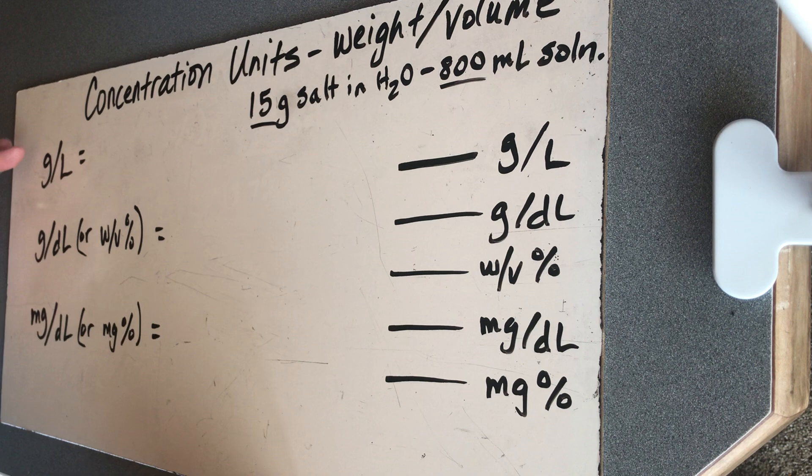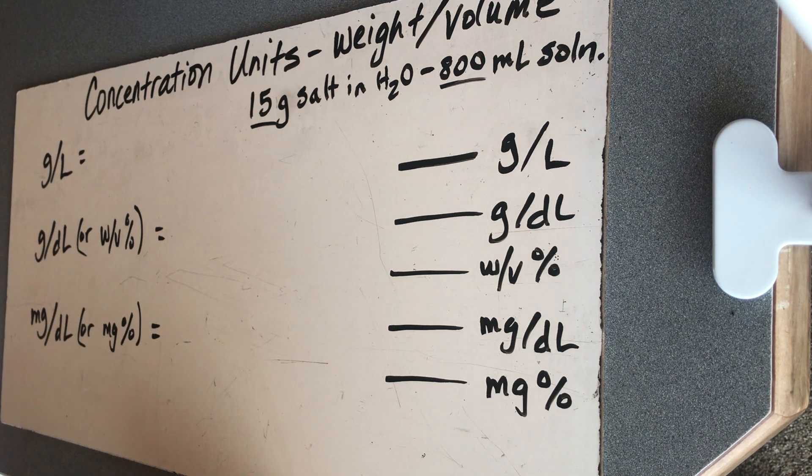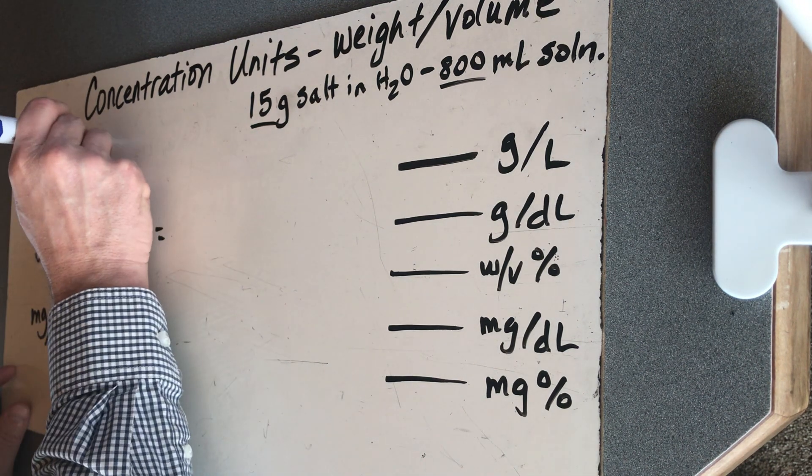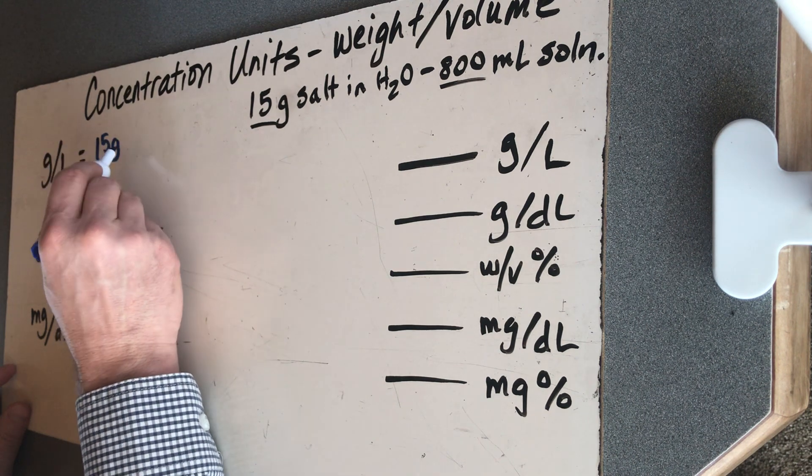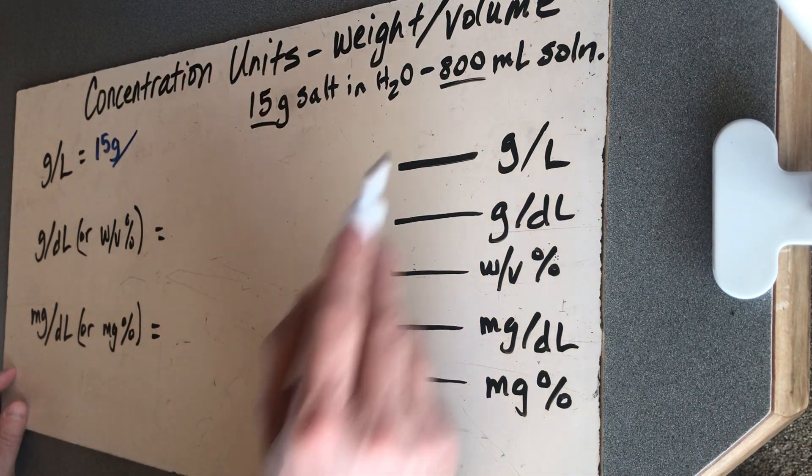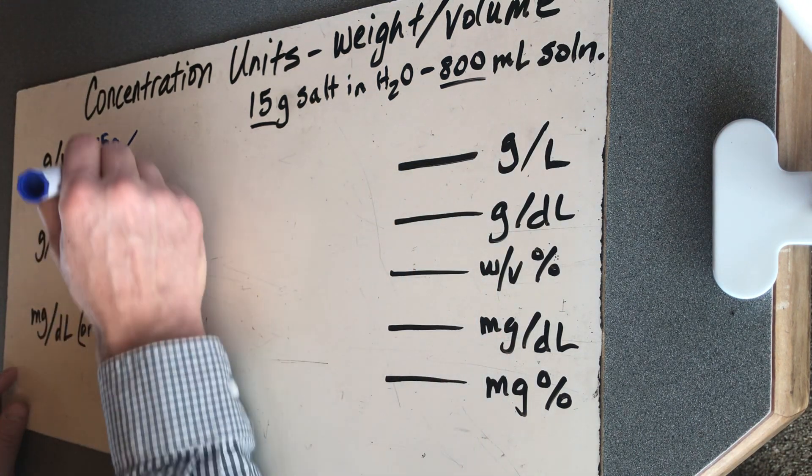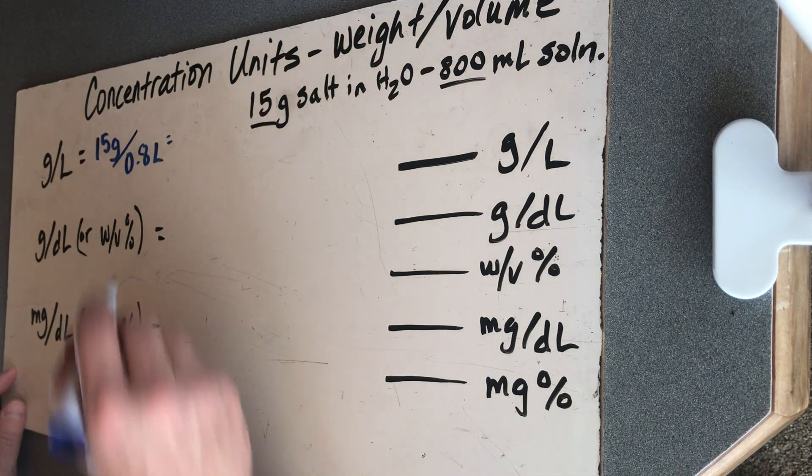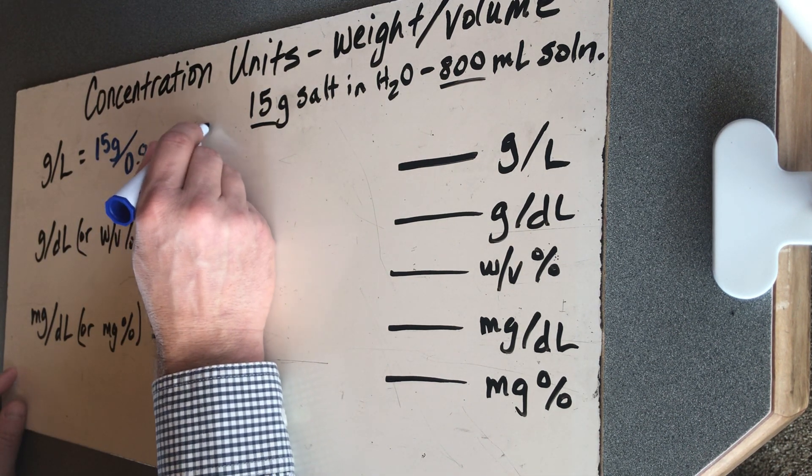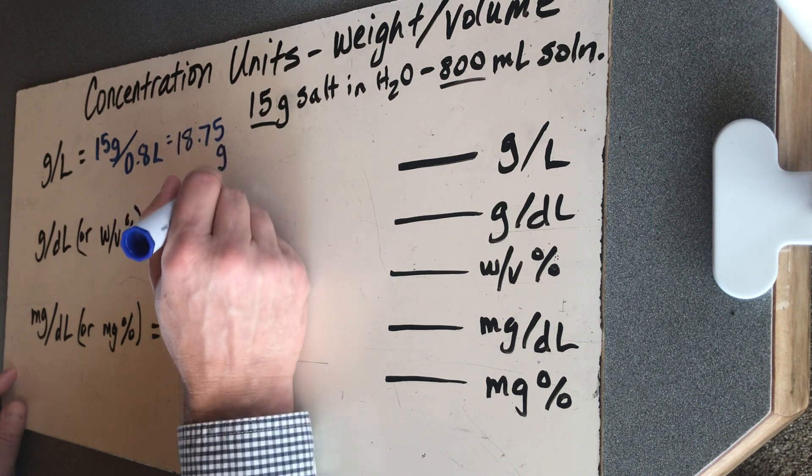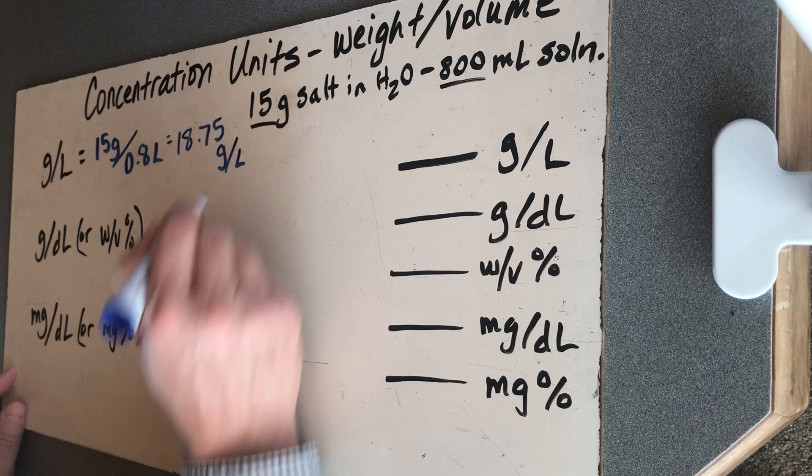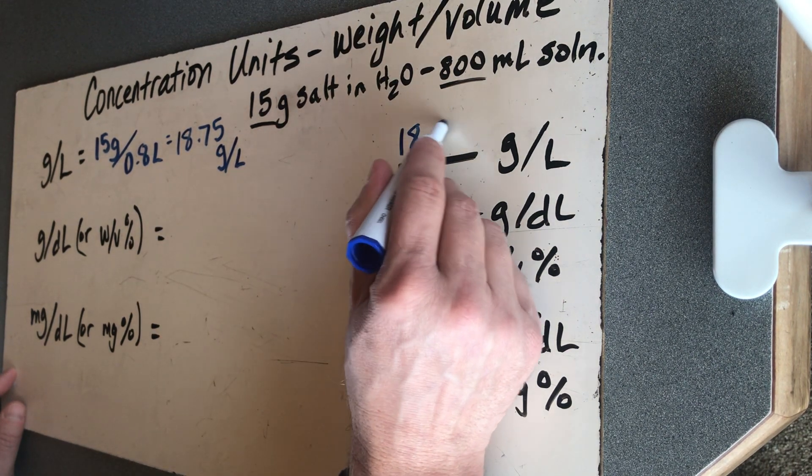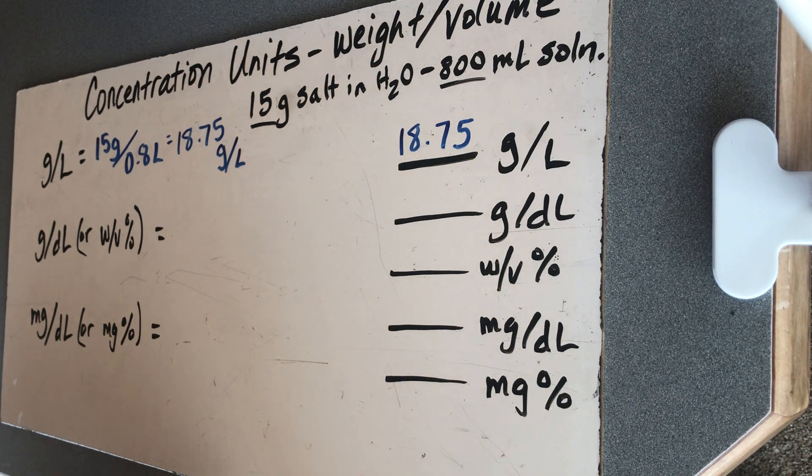We're going to start with the easiest one, grams per liter. Now, when you see these units, it gives you instructions on exactly how to calculate it. I'm going to take grams divided by liters. So up here, I got 15 grams. I'm going to write 15 grams. That goes on top. That's my solute that's being dissolved. I have 800 milliliters of solution. I need to convert that to 0.8 liters. Grab a calculator and plug it in, and I get 18.75 grams per liter. 18.75 grams per liter. Kind of a regular-sized-looking number.